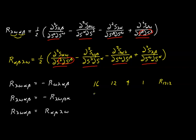In three dimensions we'd have 81 components: 45 zero and 36 non-zero, but limited to six degrees of freedom. In four dimensions we'd have 256 components: 112 zero, and the other 144 limited to 21 degrees of freedom. These symmetric relationships cut down greatly on the number of components we have to evaluate.